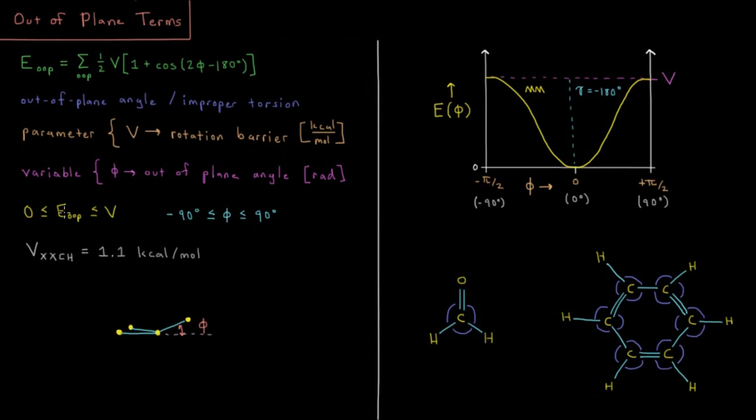The energy is going to be somewhere between zero and the rotation barrier. A typical value for something like an aromatic carbon trying to keep this hydrogen in the plane of the other three carbons would be something like 1.1 kilocalories per mole. This V again has the same units as energy, so it'll be in kilocalories per mole if that is our energy unit.